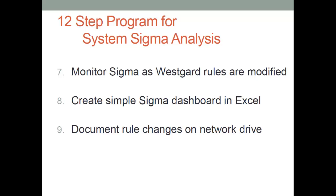After the calculation, we spread out our sigmas to see what they were, and that was eye-opening. We had high sigmas, intermediate sigmas, and low sigmas. Looking at sigmas across our whole enterprise, we could immediately see the high-performing methods, medium-performing methods, and low-performing methods as defined by total allowable error. The initial survey was very interesting.